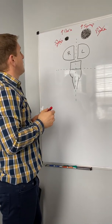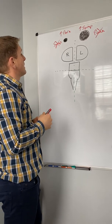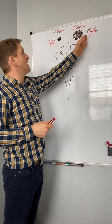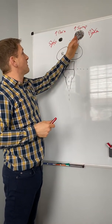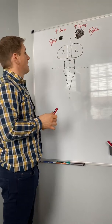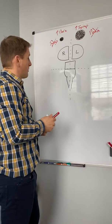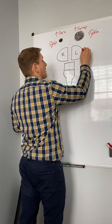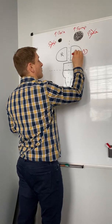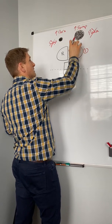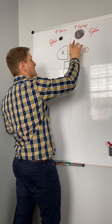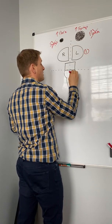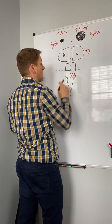If we want to say the problem is decreased parasympathetics — or increased parasympathetics — then the problem is coming from one of two places: the brain on the left side, or the pontomedullary area on the left side. Those are your only two places that this problem is going to come from.